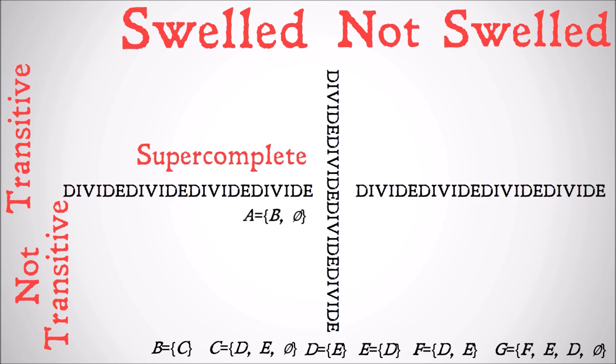Let's look at B. B has as its only member C. It doesn't contain the null set, so we can tell that it's not swelled to begin with. C has as its members D, E, and the null set, and B doesn't contain any of those. So B is not swelled or transitive.